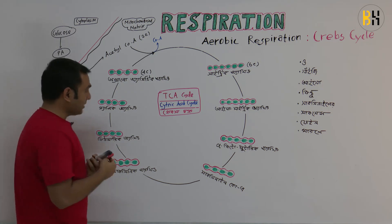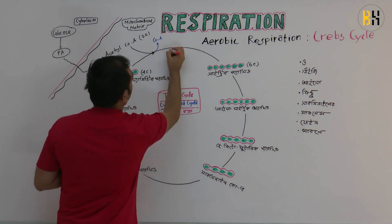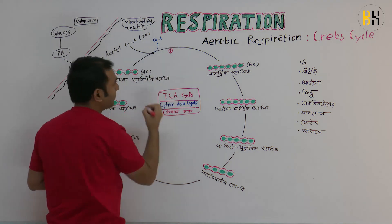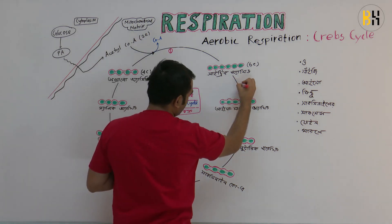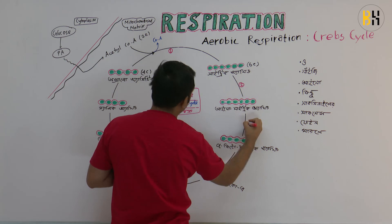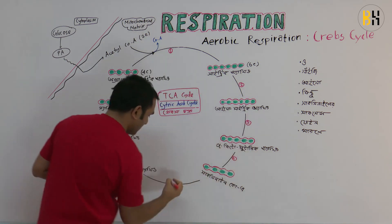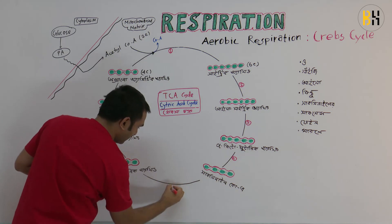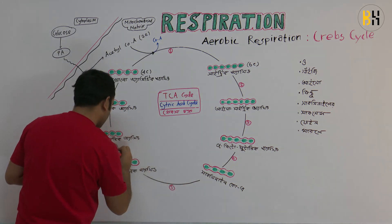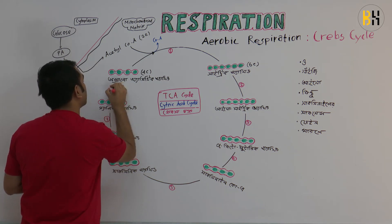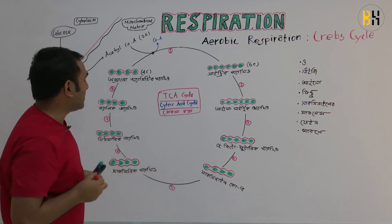So this is step 1, this is step 2, step 3, step 4, step 5, step 6, step 7, step 8. The same compound completes 8 steps in the Krebs cycle.